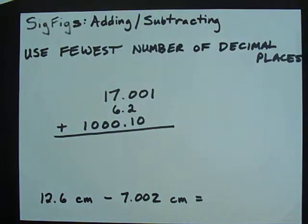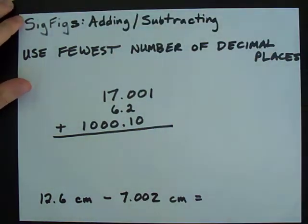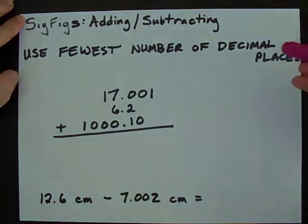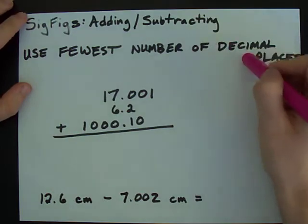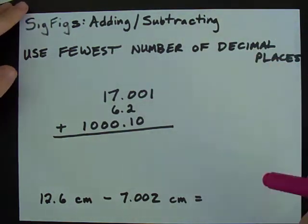How to add or subtract numbers based on significant figures. The key with adding and subtracting numbers is to use the fewest number of decimal places in any of the numbers that you're adding up.